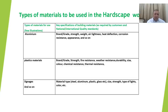For plastic materials used in the hardscape, designers need to incorporate the brand, grade, strength, fire resistance, weather resistance, durability, size, color, chemical resistance, and thermal resistance. For signages, the designer must specify the type of materials to be used — whether steel, aluminum, plastic, or glass — along with the size, strength, type of lights, and color.